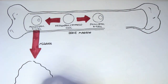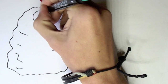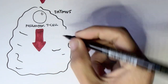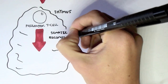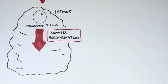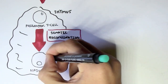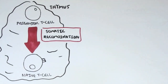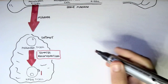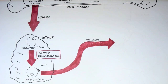The progenitor T-cell will migrate from the bone marrow into the thymus, where T-cell development occurs. The progenitor T-cell will become a naive T-cell through a process called somatic recombination, or VDJ recombination, where it will obtain a unique T-cell receptor which will bind to a specific antigen. This increases the diversity and specificity of T-cell receptors. After becoming the naive T-cell, it will then migrate into the lymph nodes.